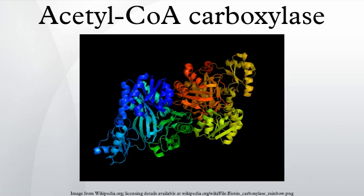When insulin binds to its receptors on the cellular membrane, it activates a phosphatase enzyme called protein phosphatase 2A to dephosphorylate the enzyme, thereby removing the inhibitory effect. Furthermore, insulin induces a phosphodiesterase that lowers the level of cAMP in the cell, thus inhibiting PKA, and also inhibits AMPK directly.